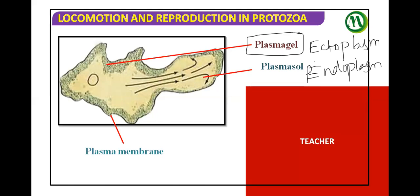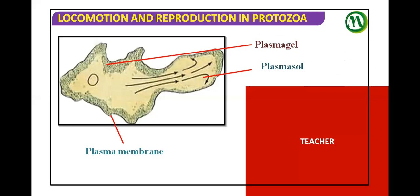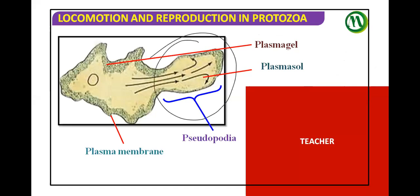Some consider that within the endoplasm itself, gel and Sol are both present. What matters is just one thing we need to learn: gel can be converted into Sol, and Sol can be converted into gel. I've introduced all three participants in the formation of pseudopodium.